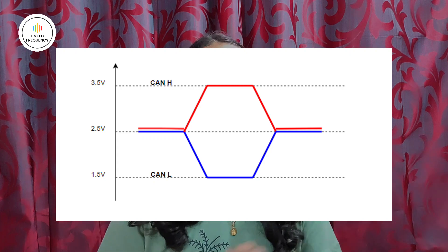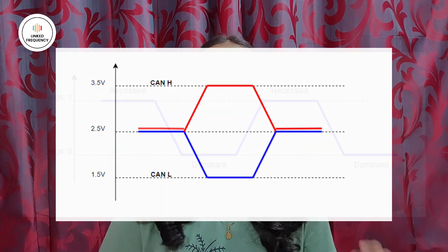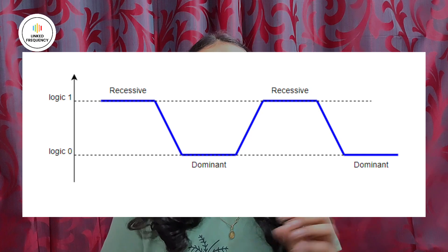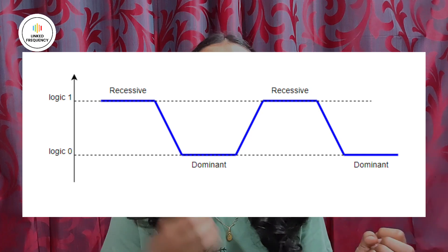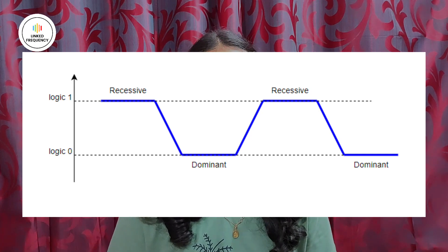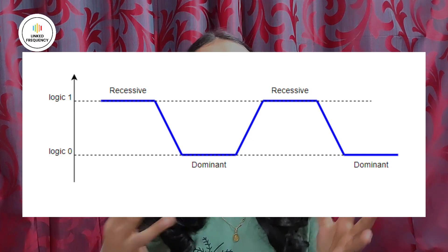When a node wants to transmit a dominant bit or logical zero, it drives CAN high towards the higher voltage and CAN low towards the lower voltage, creating a voltage difference between the two lines. On the other hand, when a node wants to transmit a recessive bit or logic level 1, or no node is transmitting, both CAN high and CAN low lines are pulled towards the middle voltage, and the voltage difference between these two lines is minimal.